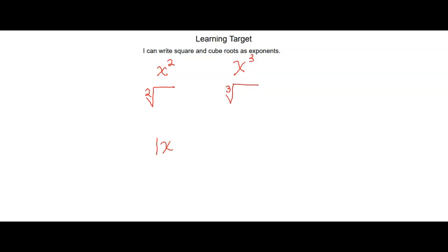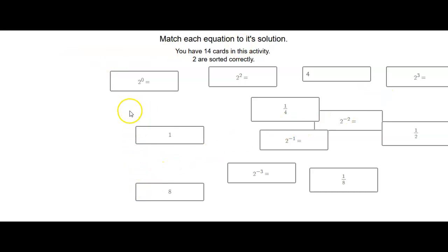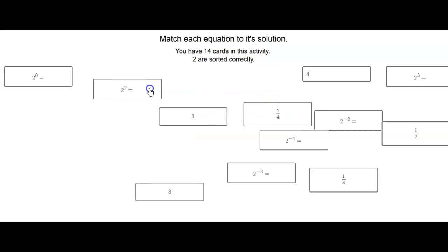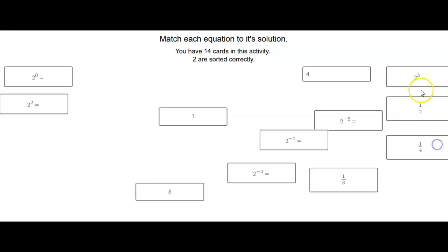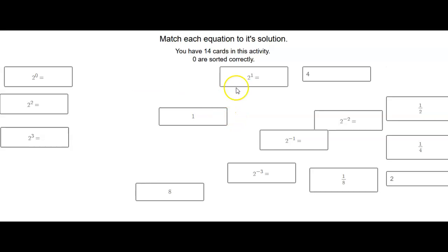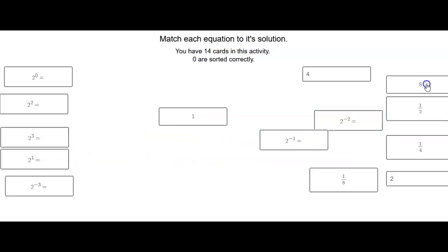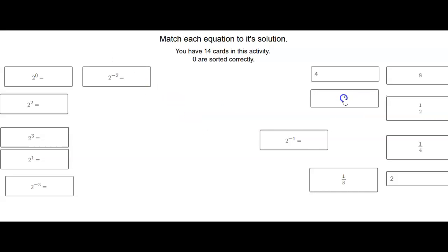We're going to be talking about cube roots and square roots today. First, we're going to take a look at this card sort. I'm going to take the ones that have exponents and move them off to one side, and take the ones that are just numbers and move those to the other side. So we have all the numbers on one side and all the exponents on the other side, and we're just going to talk about which ones go where and why.